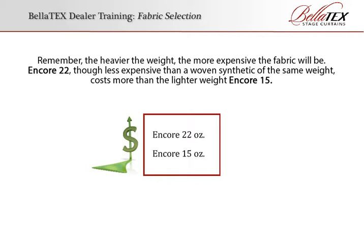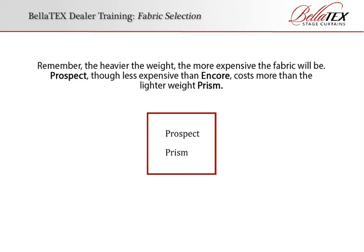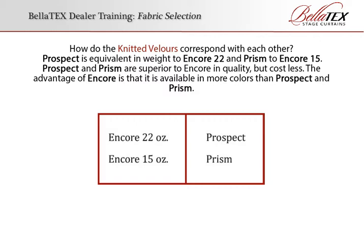The other two fabrics in the knitted velours category are the very popular Prospect and Prism. These are exceptional, very soft, highly opaque fabrics available in deep black, dark blue or provincial, and dark red or cabernet. Prospect and Prism are superior to Encore in quality and cost less, providing excellent value for all kinds of venues. Unlike Encore, Prospect and Prism are specifically milled for use as stage curtains. Prospect is equivalent in weight to Encore 22, and Prism to Encore 15. The advantage of Encore is that it is available in more colors than Prospect and Prism.